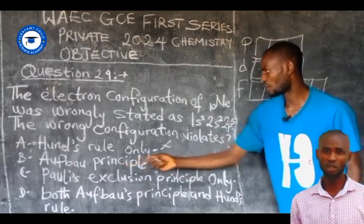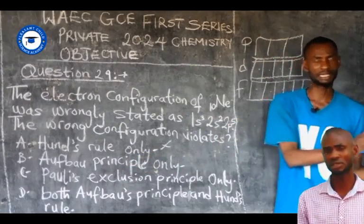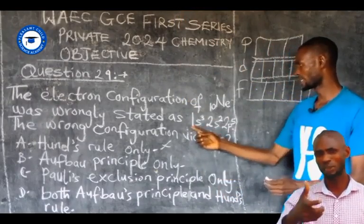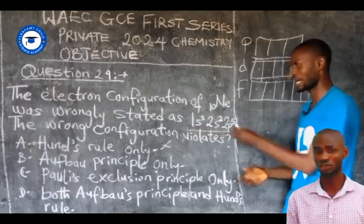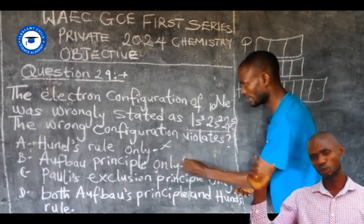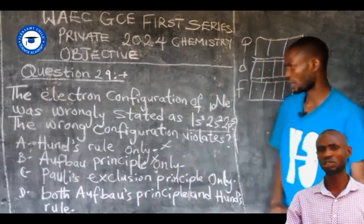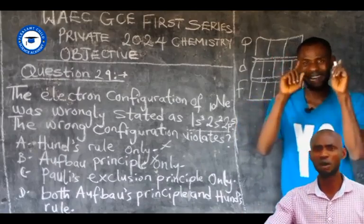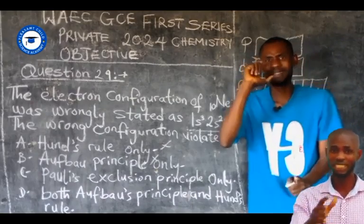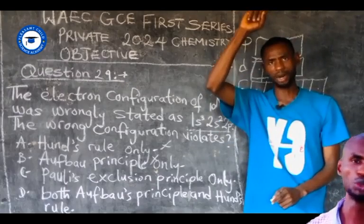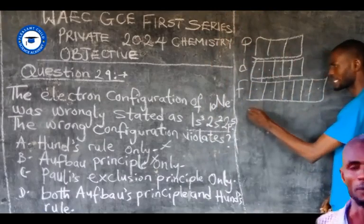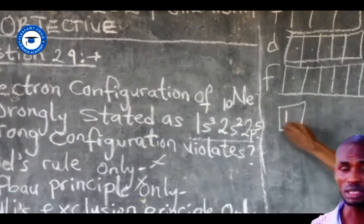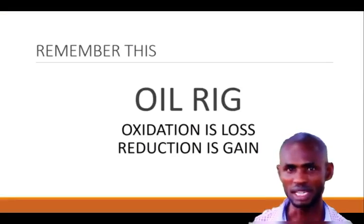The Pauli exclusion principle states that an orbital can only accommodate a maximum of 2 electrons — one with spin-up and the second with spin-down. So an orbital accommodates a maximum of 2 electrons, one in the upper spin and the second in the lower spin.